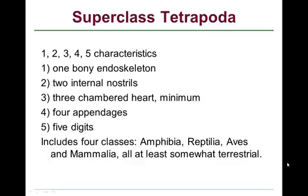Feature number two is two internal nostrils or nares. Feature number three is a three-chambered heart minimum — so you can have a three or four chambered heart in this group. Feature number four is to have four appendages, which is the feature for which Tetrapoda is named — tetrapoda means four legs. Feature number five is having five digits on each leg; that's the ancestral condition, to be pentadactyl.